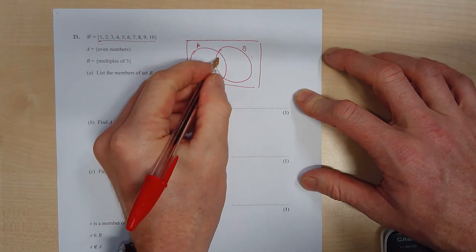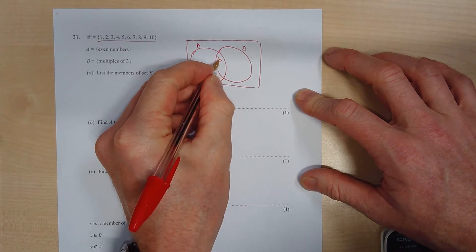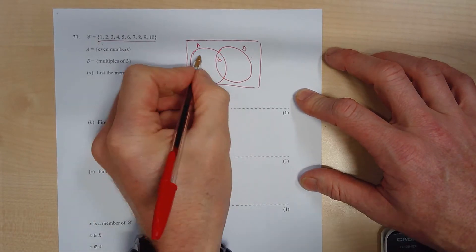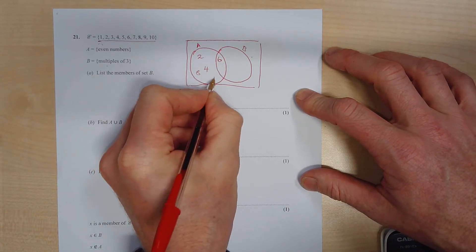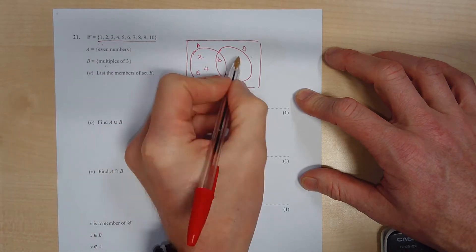Okay, so if we think of the numbers that can go in the middle that are even and multiples of 3, that's going to be 6. And then we can start to think of even numbers: 2, 4, 6 we've already got, 8, and 10.